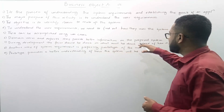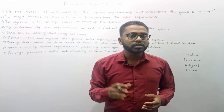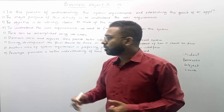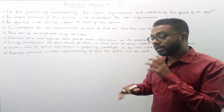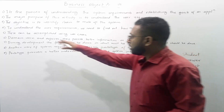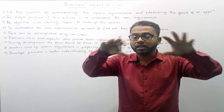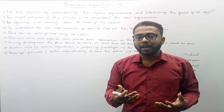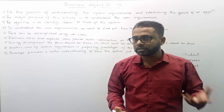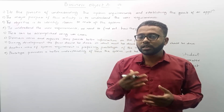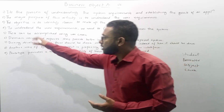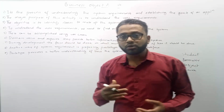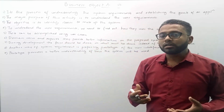Domain users and experts may provide better information on the proposed system. The proposed system is the system we are planning to develop, while an existing system is one that already exists. Domain users are those who will be working under that environment — for example, if a customer asks me to develop a system to be used in their office, the office people who will use that system in the future are the domain users, and I can collect requirements from them.